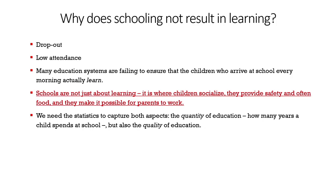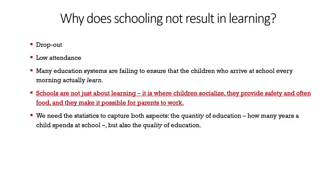Why does schooling not result in learning? There can be various reasons — dropouts due to income and other factors, low attendance, and increasing absenteeism. Many education systems are failing to ensure that children who arrive at school can actually learn, due to lack of adequate teachers and infrastructure. Schools are not just about learning — children socialize, are kept safe, and receive food such as midday meals. We need statistics that capture both quantity and quality of education.